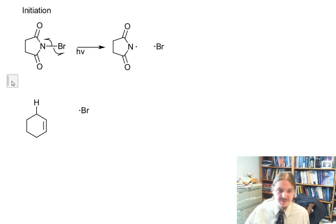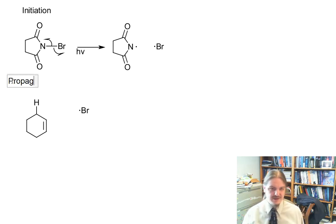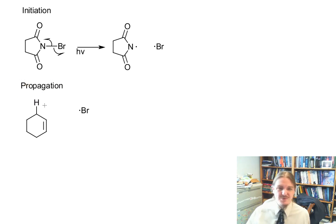And thus begins the propagation steps. The propagation steps in here are going to involve something a little bit weird, so be on the lookout for it, okay? First thing is actually pretty normal. Hydrogen abstraction from the cyclohexene. We generate the cyclohexenyl radical, and we generate hydrogen bromide.